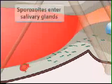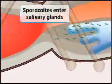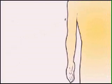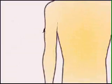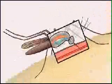The oocyst ruptures and releases the sporozoites, which migrate to the salivary glands. From the salivary glands, the sporozoites can infect the next human host and repeat the Plasmodium life cycle.